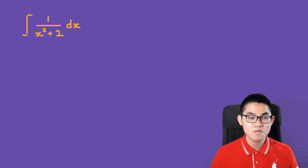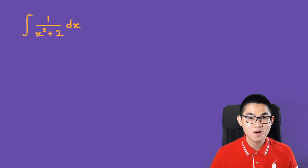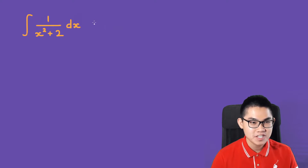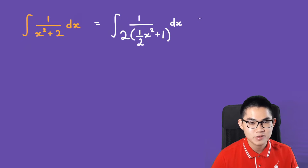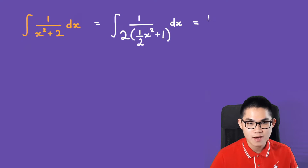We need to find the integral of 1 over x squared plus 2. This can be solved with u-substitution. The first thing we do is factor out the 2, giving us the integral of 1 over 2 times 1 over (x squared over 2 plus 1) dx. You will see why we do this in a second. We can then bring the 1/2 outside of the integral.